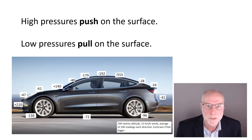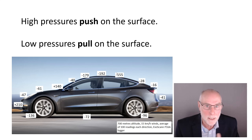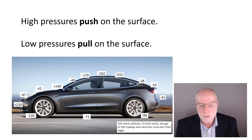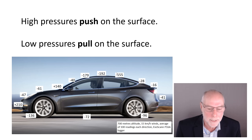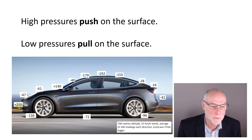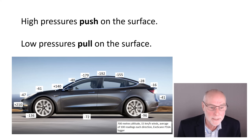Here are some air pressures that I measured on a Tesla Model 3 along the centre line of the car, the longitudinal axis. 15 kilometre an hour winds at the time, doing about 80 kilometres an hour — 50 miles an hour. Average of 100 readings in each direction using an EvoScan P16A scanner. There's high pressure right at the front of the car — plus 210 units. At the base of the windscreen we can see high pressure there as well, but not nearly as high as at the front.